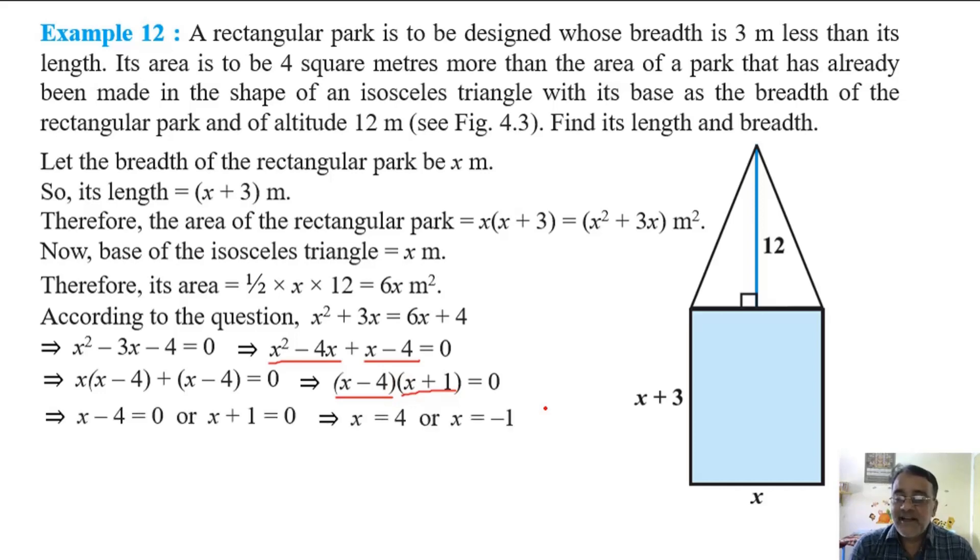But we have to reject x equals minus 1. Why? Because it is a length and it cannot be negative. Very good. So x should not be equal to minus 1 since length of side is always positive. It cannot be negative.